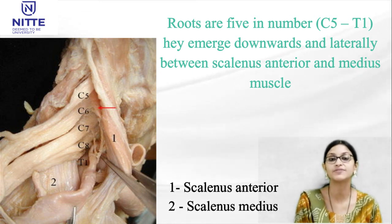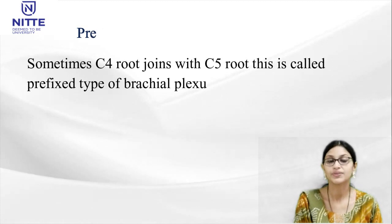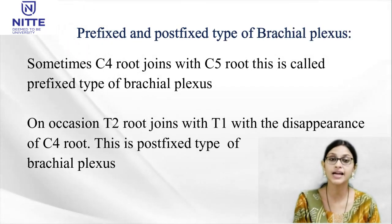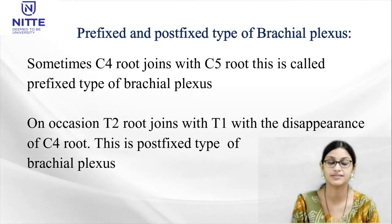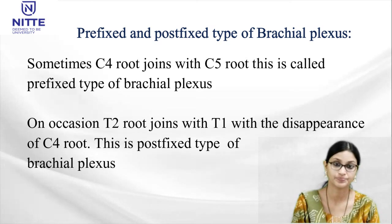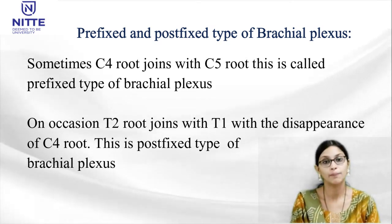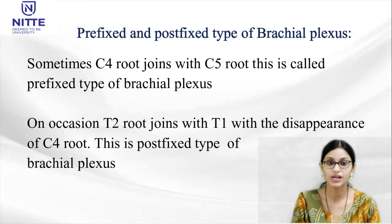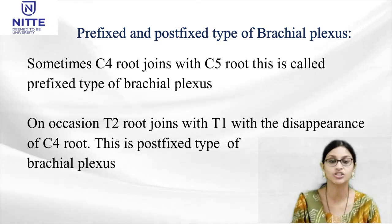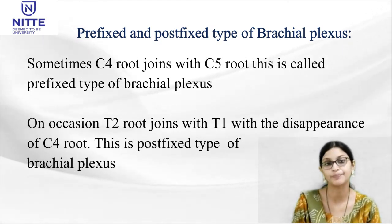Sometimes C4 root will join together with C5, and this type of formation of brachial plexus is called the pre-fixed type. On occasion T2 may contribute — it joins with T1 — and in such condition the type of brachial plexus formed is called the post-fixed type.